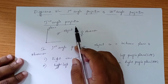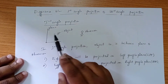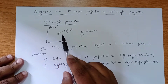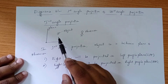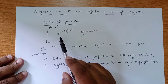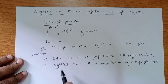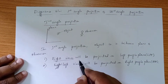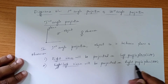In first angle projection, the object will be there in between the observer and the plane. You can consider either the first quadrant or the fourth quadrant. The object will be in between the plane and the observer. Right views will be projected on the left profile plane and the left views will be projected on the right profile plane.